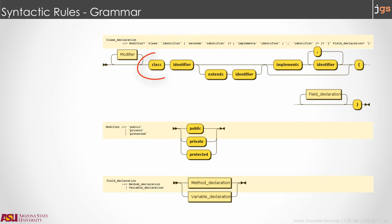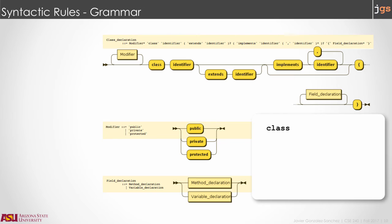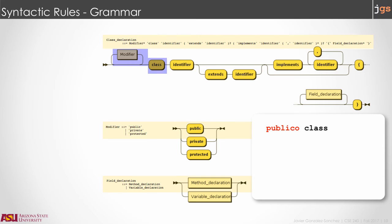The first rule defines that a Java program should start with the keyword 'class', but also tells us that we could have a modifier — it is optional. To know what a modifier is, we review the rule for 'modifier'. That rule is just ovals — basically a list of all the words you can put before the keyword 'class'. If you put something not listed as a valid modifier, that is going to be an error.